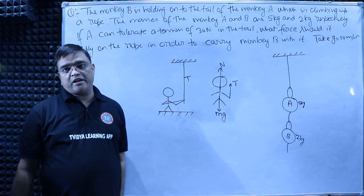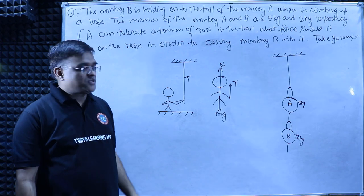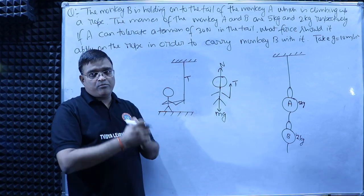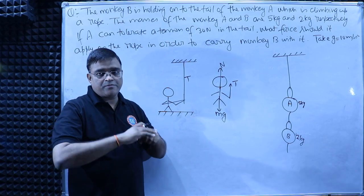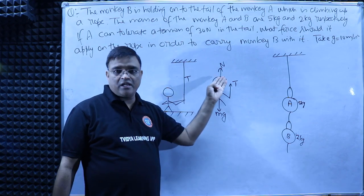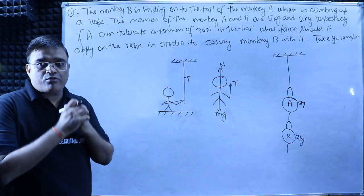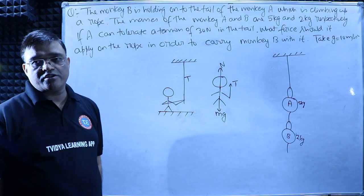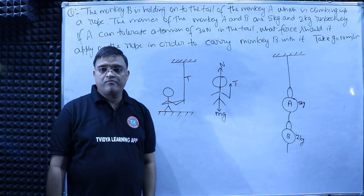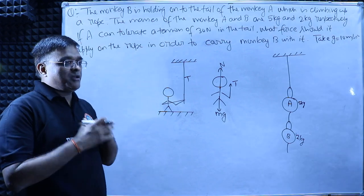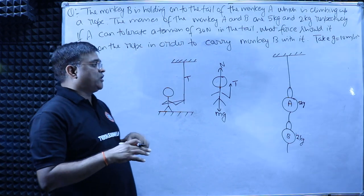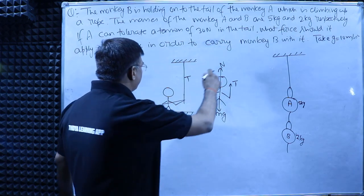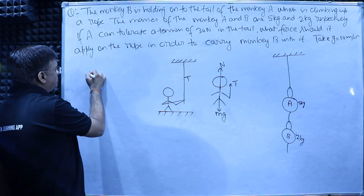This is your free body diagram. You are on the surface, the rope is pulling you up, and the surface is holding you up via normal reaction. When you leave the surface, the normal reaction will be zero — it is a contact force. While you are still on the surface, you are in equilibrium.